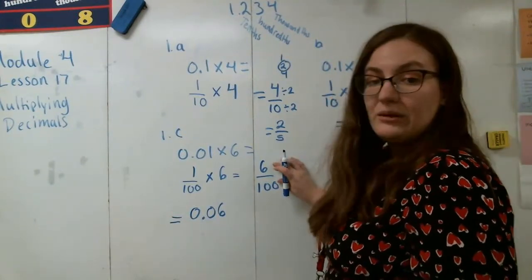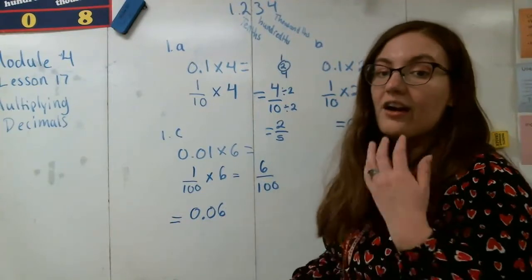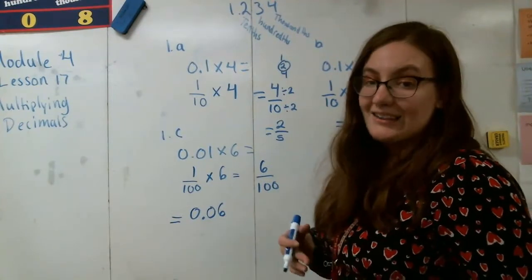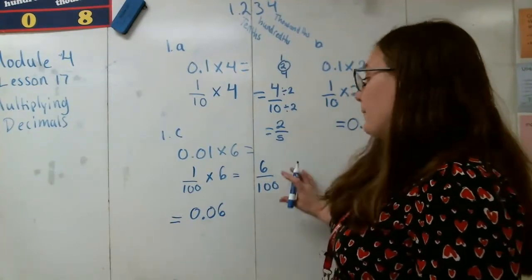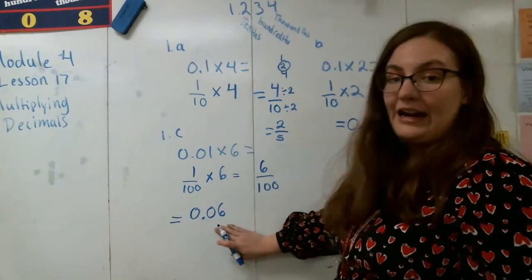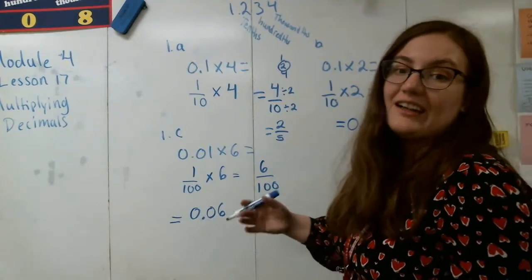Now this is why we might want to write our answers as decimals because if I had to simplify 6 hundredths then that'd be a little bit difficult. So when I say 6 hundredths I want that 6 in my hundredths place. So I need to put a 0 in my tenths, a decimal here so that I have 0.06 — so 6 is in my hundredths, 0 is in my tenths, there's a decimal, and then I could also put that 0 in my ones place to show my final answer of six hundredths. This fraction and this decimal are the exact same number, just written differently.